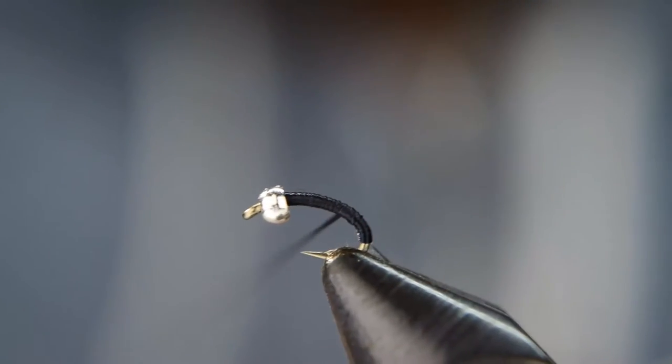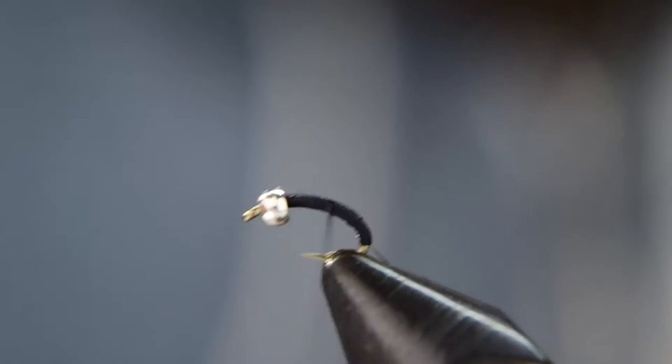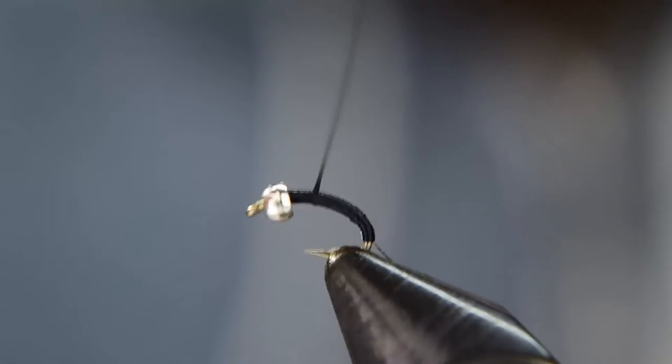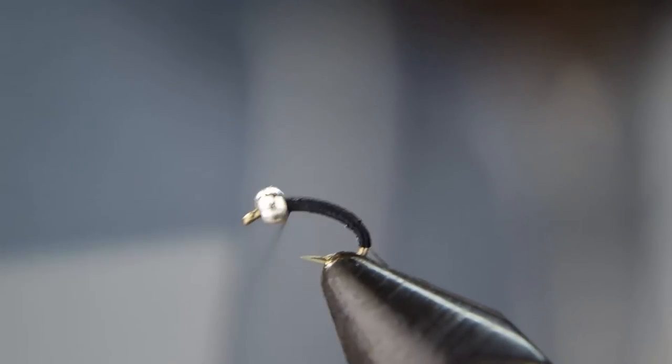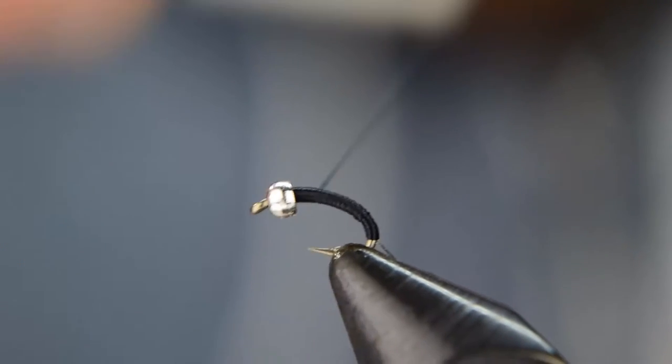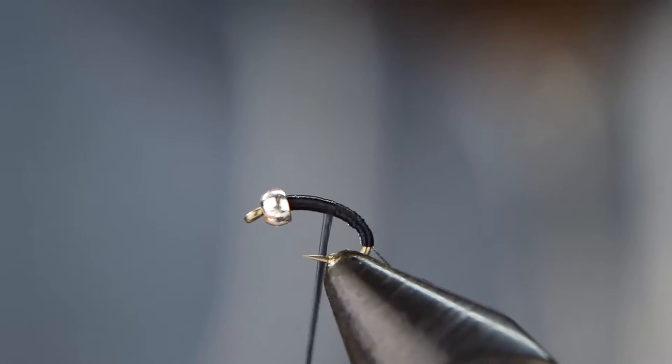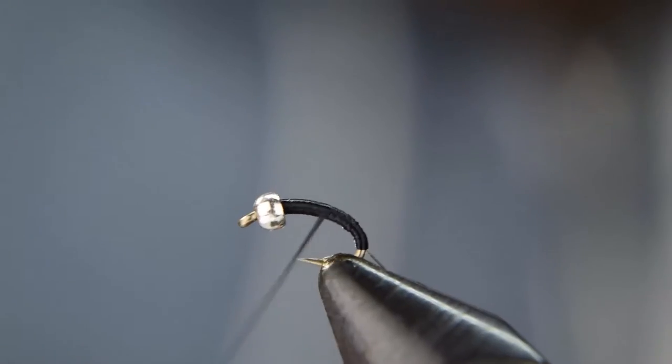So now as you come up, you're going to be laying down nice flat wraps. You're going to want to keep wrapping here, every once in a while stopping and spinning your bobbin to flatten out that thread.